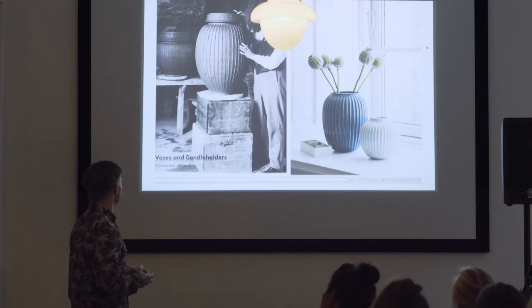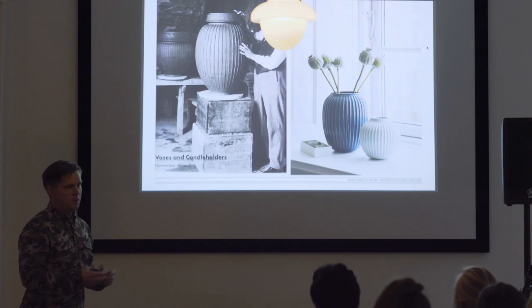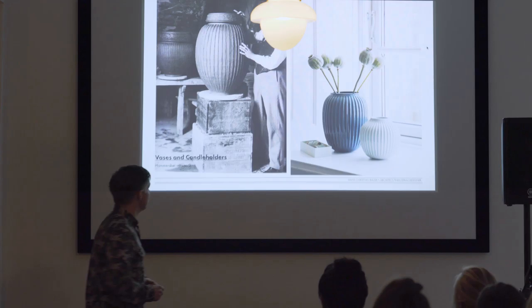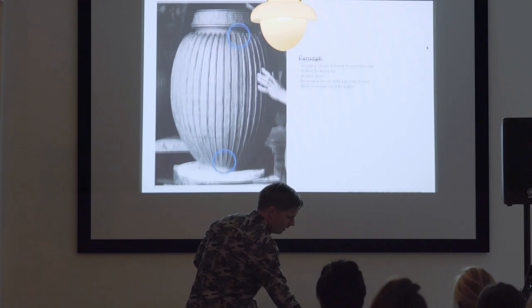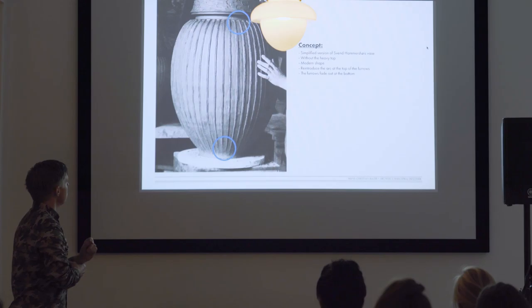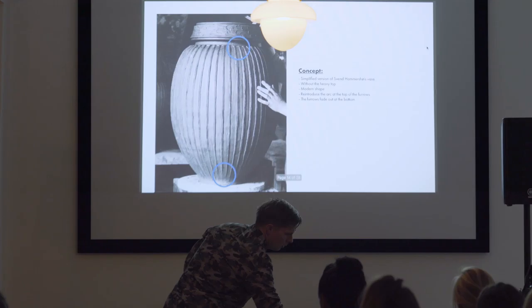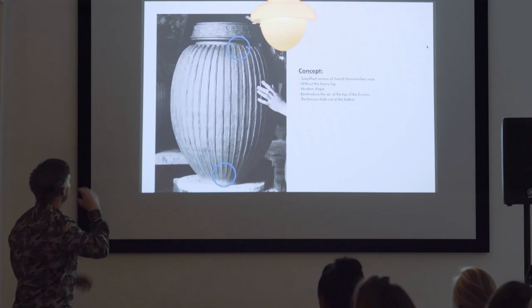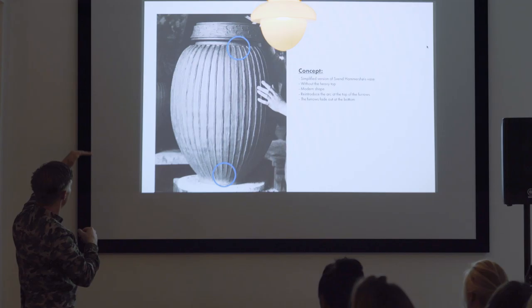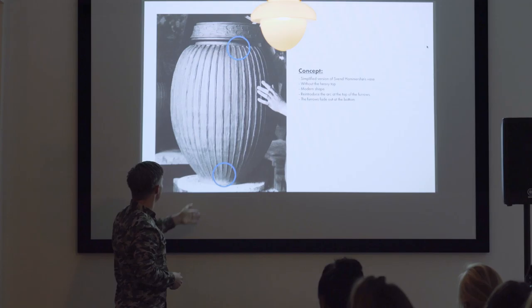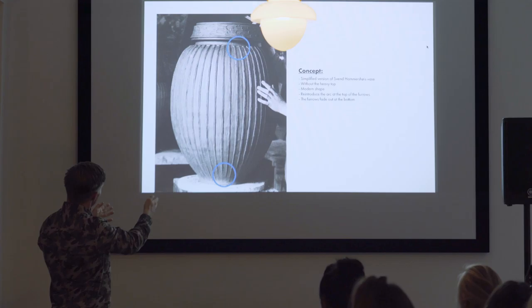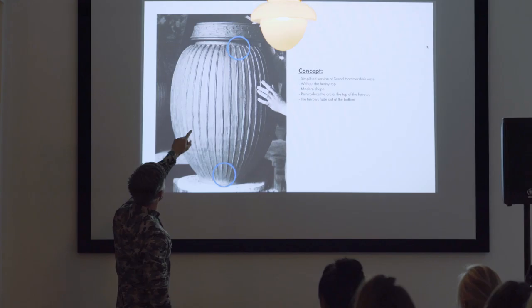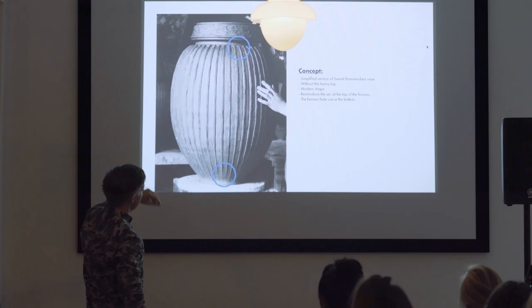After we launched the first series of the tableware, which was a really big success, Kahler and I thought: we made dinnerware inspired by a vase, so let's make a vase inspired by the vase as well. We made a simplified version of a Hammershøi vase, removing the heavy top with the flowers and giving it a more modern shape. His widest point was quite far down, which looked a bit old, and the edge at the bottom went very straight into the table, so I tried to lift it and give it a rounder edge.